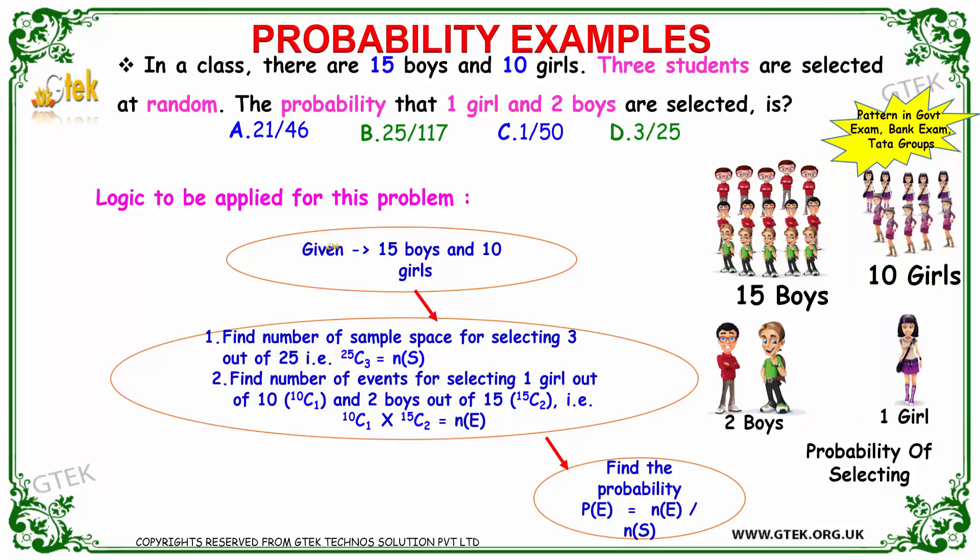As I told, I got 15 boys and 10 girls. The number of sample space of selecting 3 out of 25 is 25C3. And you need to identify the number of possible events: one girl out of 10, so 10C1, and 15C2 for boys. The total number is 25, so 25C3. This is the probability.